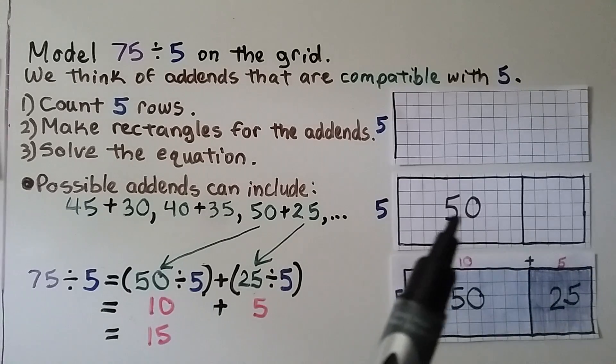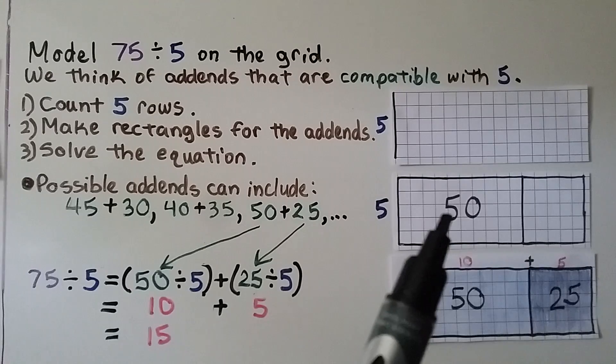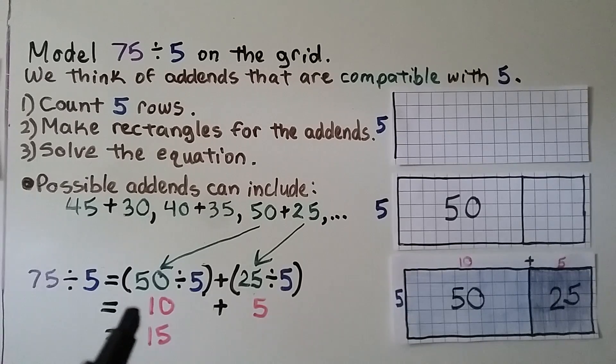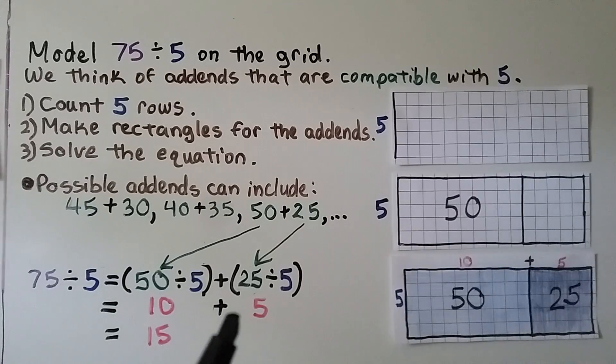We make the rectangles for the addends. We've got 50. And then we could write 25 here, and we can even color them in. We see 50 divided by 5 is equal to 10. 25 divided by 5 is equal to 5. And 10 plus 5 is equal to 15. So 75 divided by 5 is equal to 15.